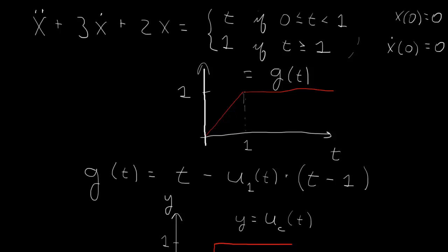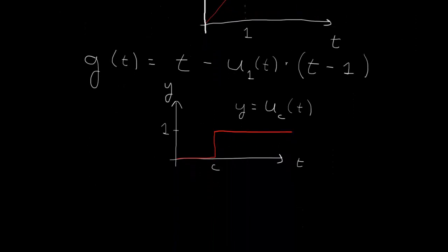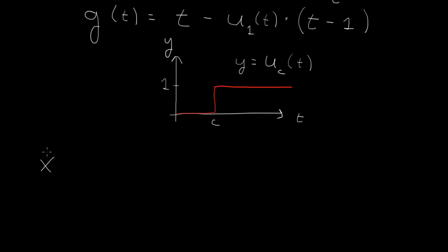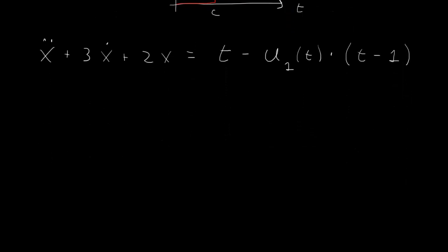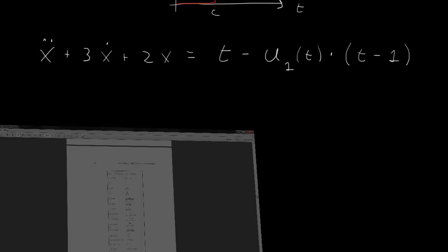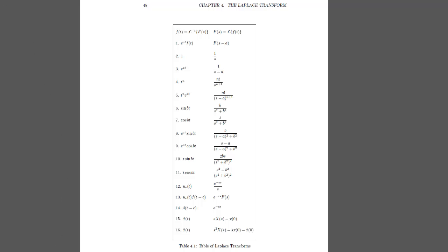This lets us use the Laplace transform table, which has the Heaviside step function in it. So let's rewrite this: x double dot plus 3x dot plus 2x equals the right-hand side, which is t minus the Heaviside step function stepping up at 1, times t minus 1. This is the differential equation we want to solve, with homogeneous initial conditions x of 0 equals 0 and x dot of 0 equals 0.